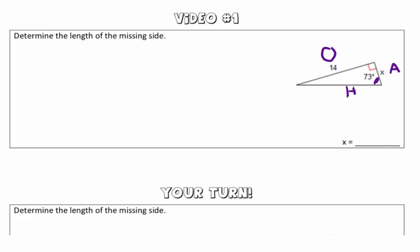So now that we have our sides labeled, we have to determine which trig ratio do we want to use. So a lot of us like to use the SOH CAH TOA, so I'm going to write that out. SOH CAH TOA.